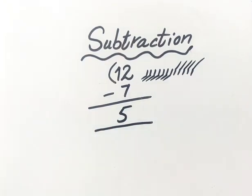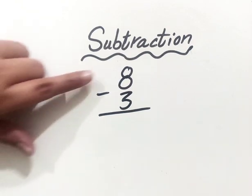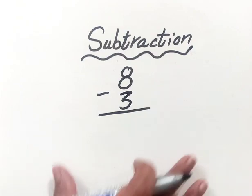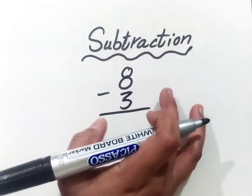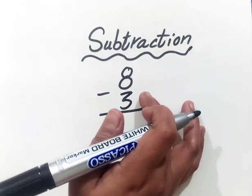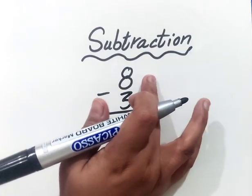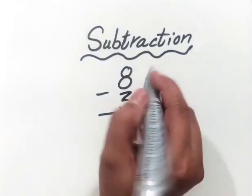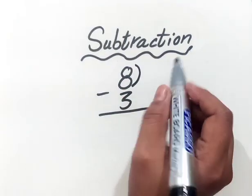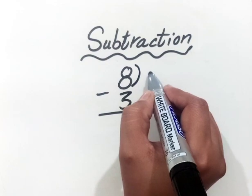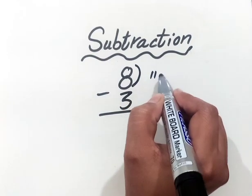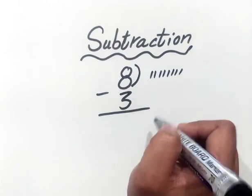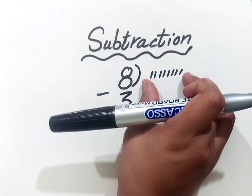Another question is 8 minus 3. It means we will subtract 3 from 8. First of all, I'll see what is the first value — that is 8. I'll draw 8 lines here: 1, 2, 3, 4, 5, 6, 7, 8. Now these are 8 lines.